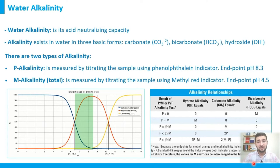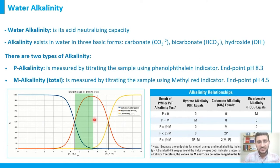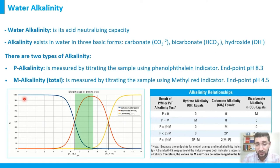Now let's look at the alkalinity distribution, also called carbonate or carbon distribution in a water sample. The graph shows three species: carbonate (CO₃²⁻), bicarbonate (HCO₃⁻), and carbonic acid (CO₂ dissolved in water, represented as H₂CO₃), plotted against pH from 0 to 14. At pH around 1, only carbonic acid is present. Below pH 5, 100% of dissolved carbon is in the form of CO₂.